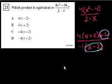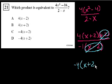If we assume that x does not ever equal 2, because x equaling 2 would make this undefined since you can't divide by 0, but if we make that assumption, we can cancel those out. And then we have 4 divided by negative 1, which is minus 4 times x plus 2. And that is choice D.